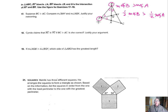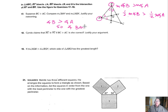So comparing angle BAY versus angle ABX: angle BAY is half the measure of angle A, and that's going to be smaller than angle ABX, which is half the measure of angle B, which starts out bigger to begin with. So since BC is greater than AC, angle B is greater than angle A, and therefore angle BAY — which is half of B — is greater than angle ABX — which is half of A.